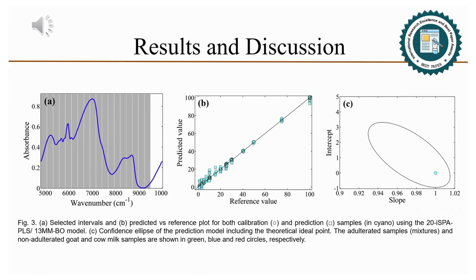Employing 14 latent variables and selecting 18 intervals. To illustrate the good fit of the 2D iSPA-PLS 13 MMBO model, a predicted versus reference plot for both calibration and prediction samples is shown. Additionally, an AJCR test was then applied and demonstrated that the confidence ellipse of the prediction model includes the theoretical ideal point, presenting therefore no significant bias.